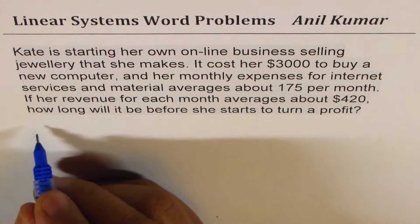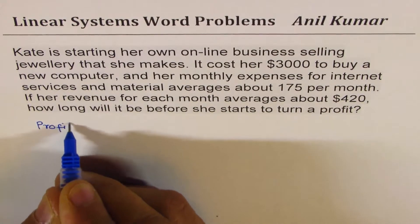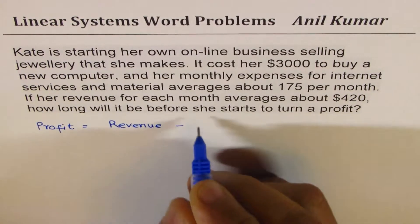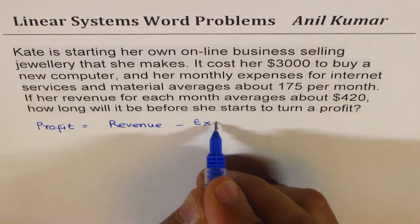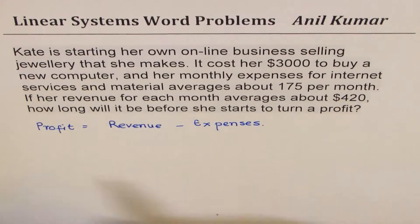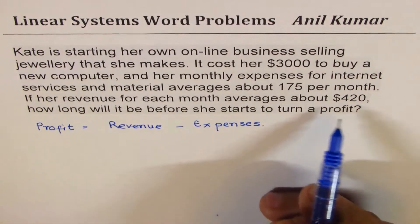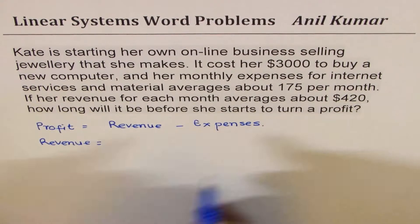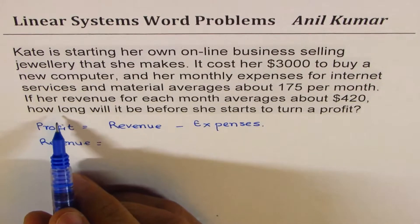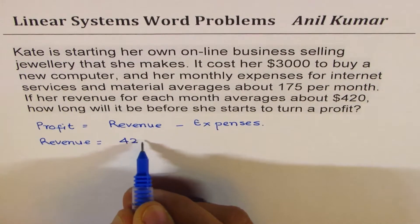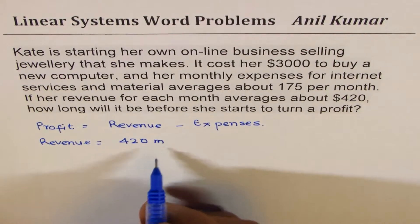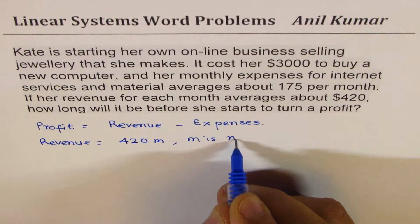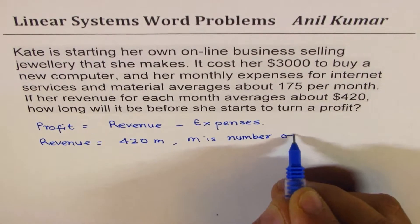So basically, what is a profit? Profit is revenue takeaway expenses. You get revenue from selling items. So in this case, revenue is $420 per month. So we can write this as $420M, where M is number of months.